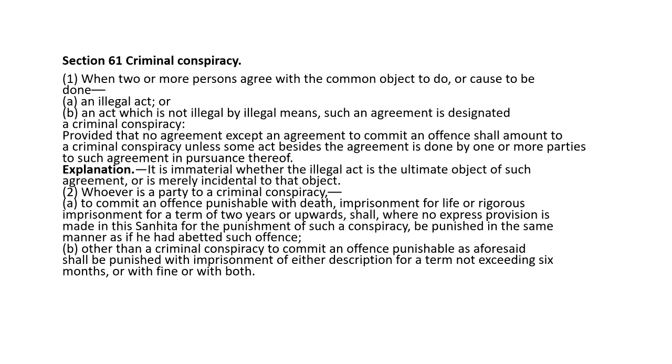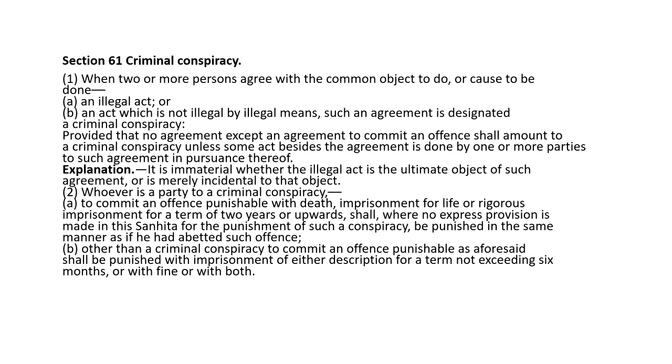The minimum number of people to constitute a conspiracy should be two, and there should be an agreement to do either an illegal act or an act which is perfectly legal but sought to be done by illegal means. Under section 61, when two or more persons agree with the common object to do or cause to be done — there has to be an agreement between two or more people and there must be a common objective.